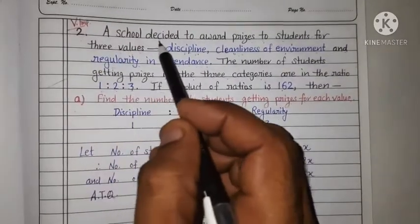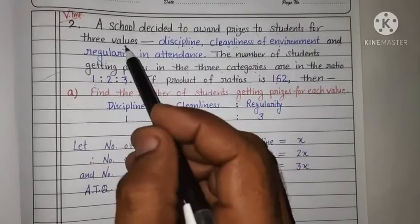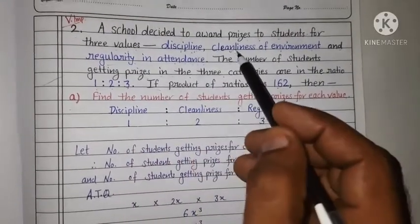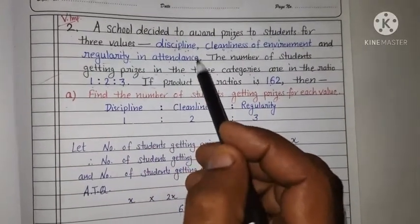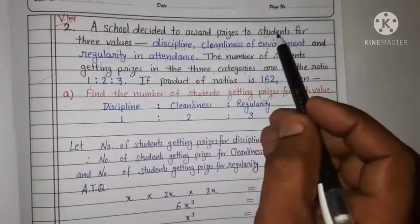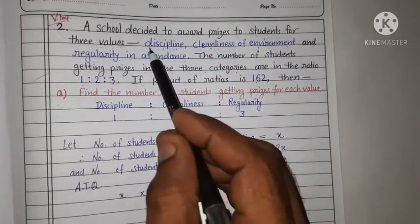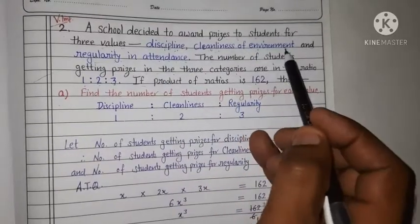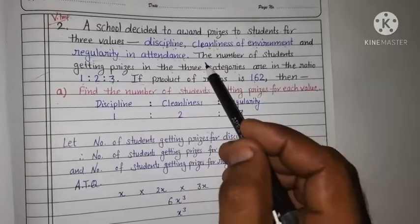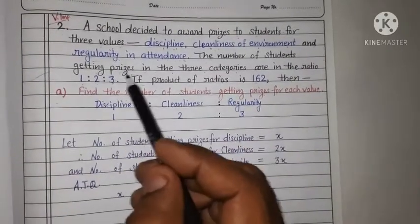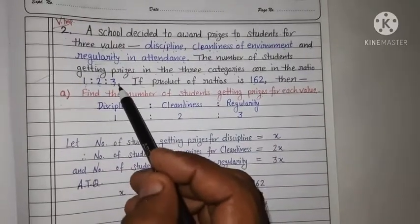Question number two. A school decided to award prizes to students for three values: discipline, cleanliness of environment and regularity in attendance. The number of students getting prizes in the three categories are in the ratio 1 ratio 2 ratio 3.